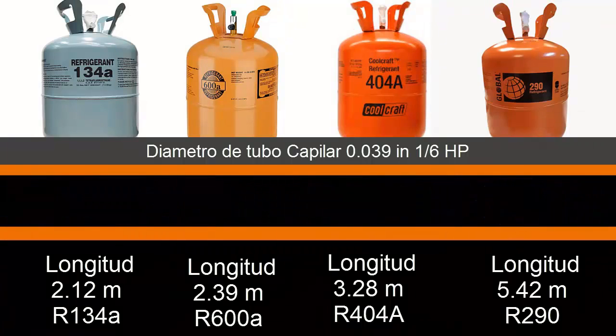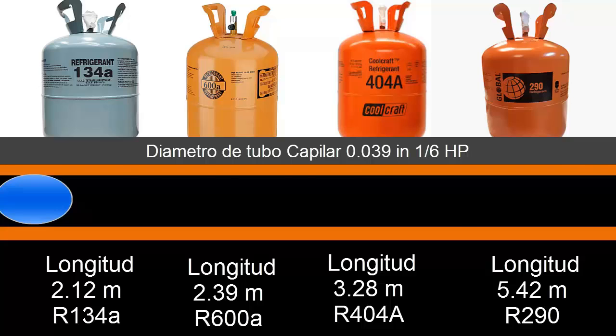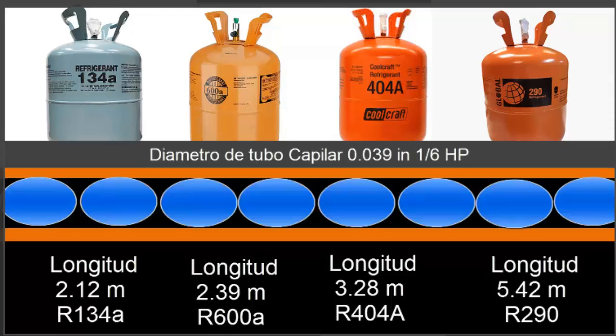Observe how for the same diameter, when we use different refrigerants the length of the capillary must logically change. Let's see how R-134A has in all cases the smallest length, followed by R-600A, followed by R-404A, reaching R-290 which is the one that has the longest length.